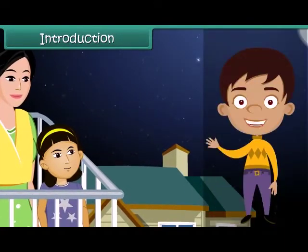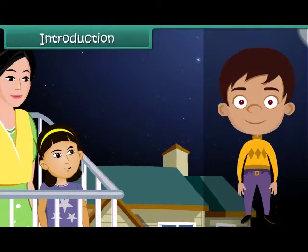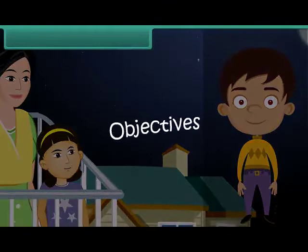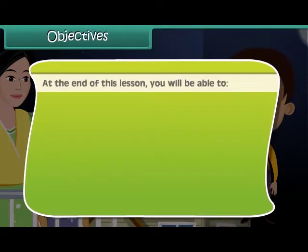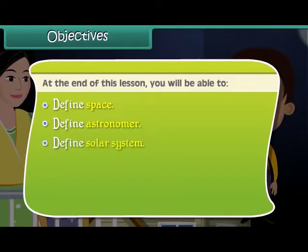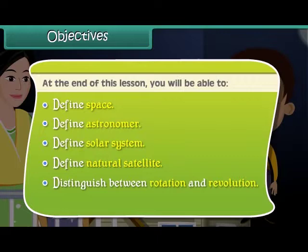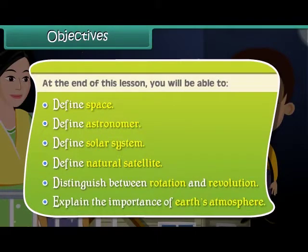In this lesson you'll learn about the objects in space. At the end of this lesson you'll be able to: define space, define astronomer, define solar system, define natural satellite, distinguish between rotation and revolution, and explain the importance of Earth's atmosphere.